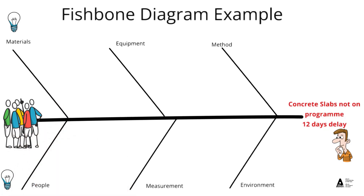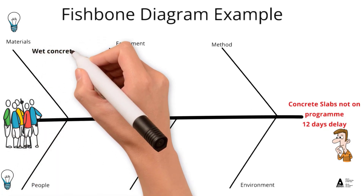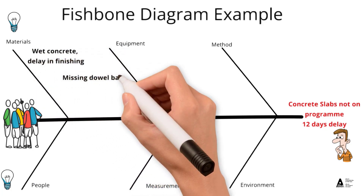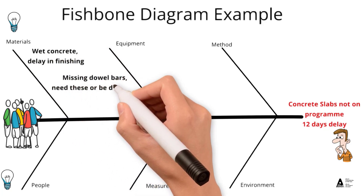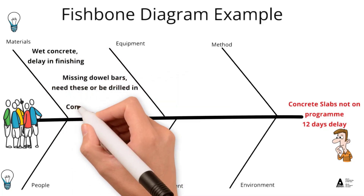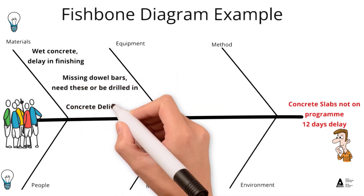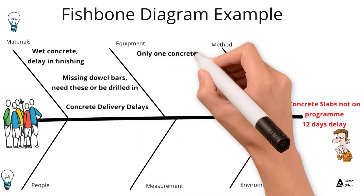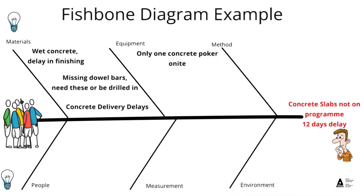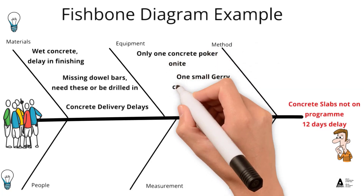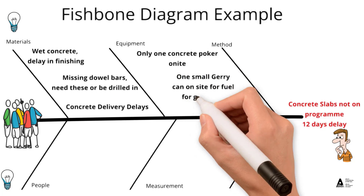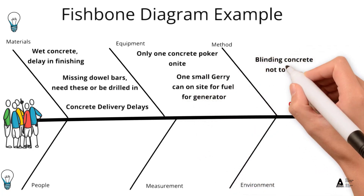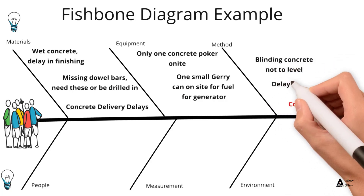Under materials, ideas coming up include: wet concrete delay in finishing, missing dowel bars, and delays in concrete being delivered. These ideas come from anyone on the floor — any idea that comes up is put on the fishbone diagram. Under equipment: only one pump on site, and a small jerry can to refill the generator. Under methods: blinding concrete not to level, causing issues for the steel cage further down the line.